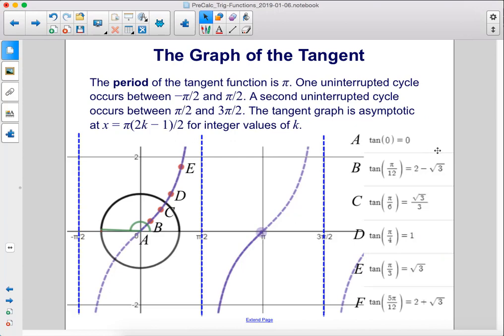The period of the tangent function is π. One uninterrupted cycle occurs between -π/2 and π/2. A second uninterrupted cycle occurs between π/2 and 3π/2. The tangent graph is asymptotic at x = π(2k - 1)/2 for integer values of k.